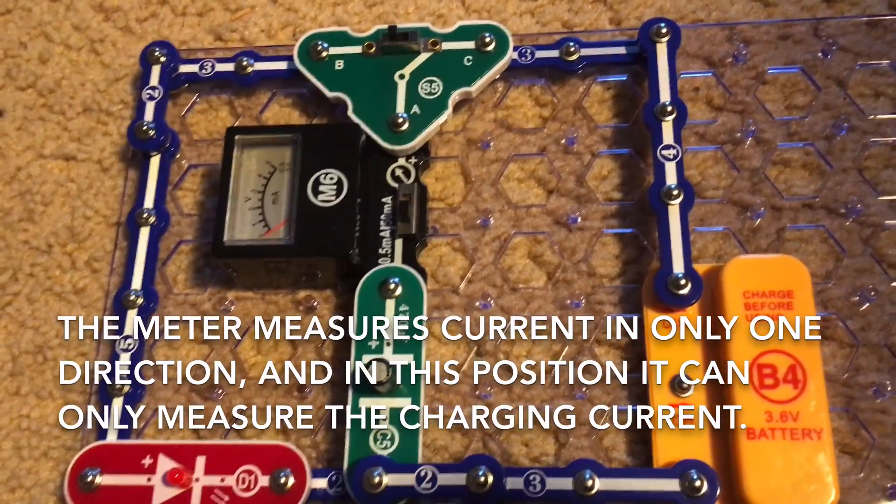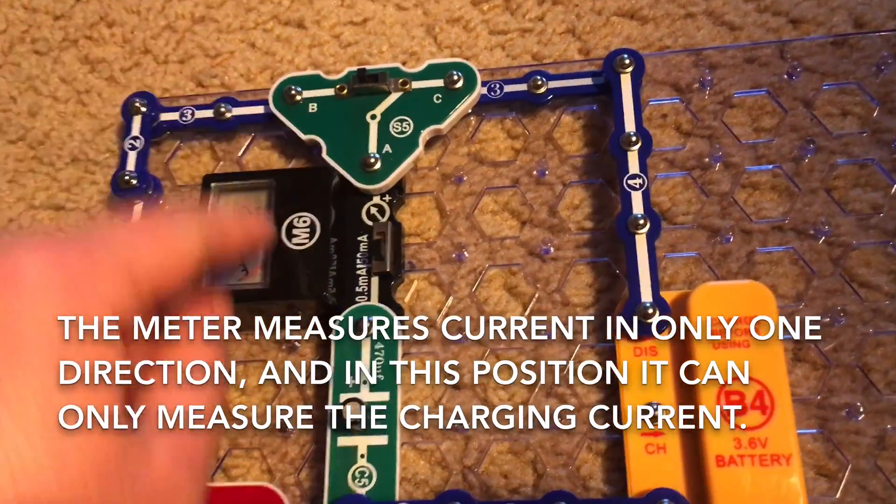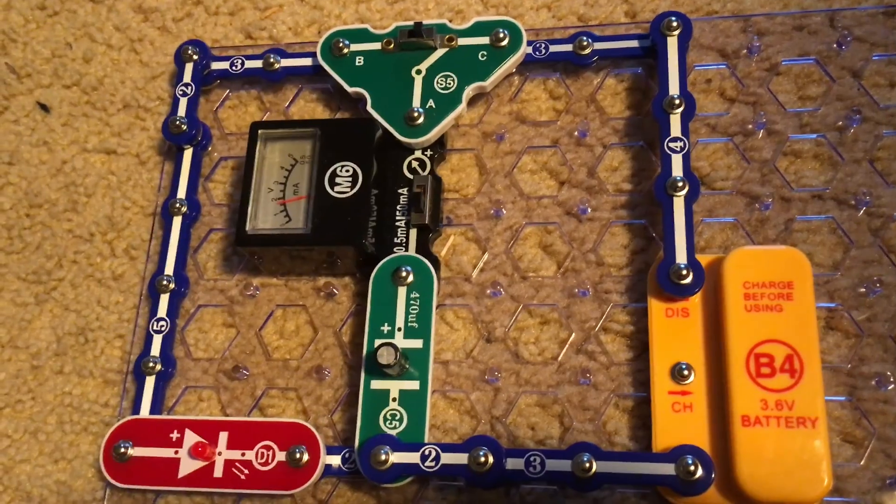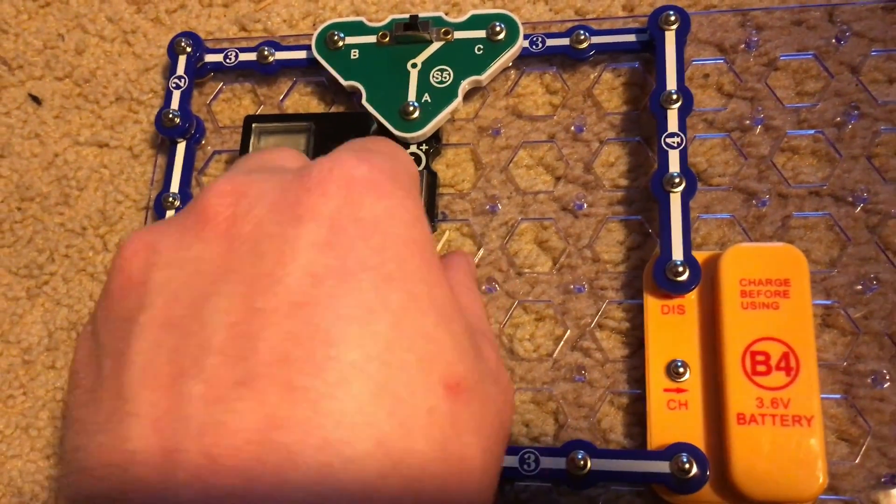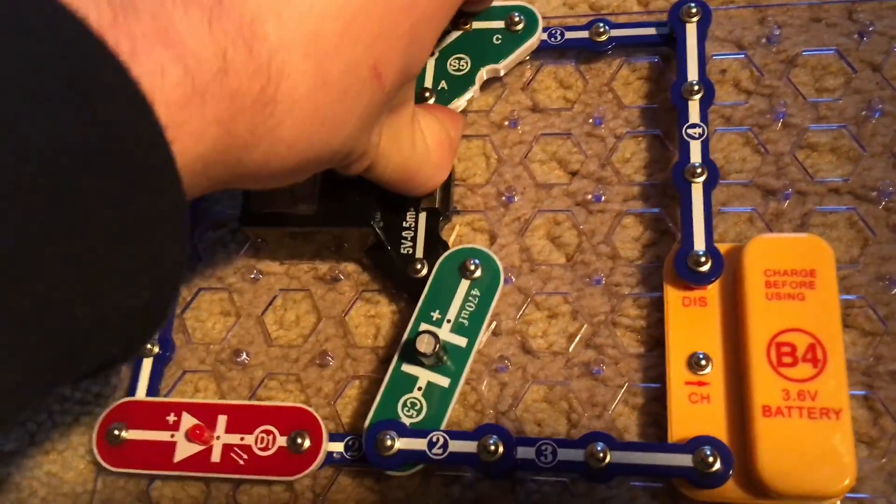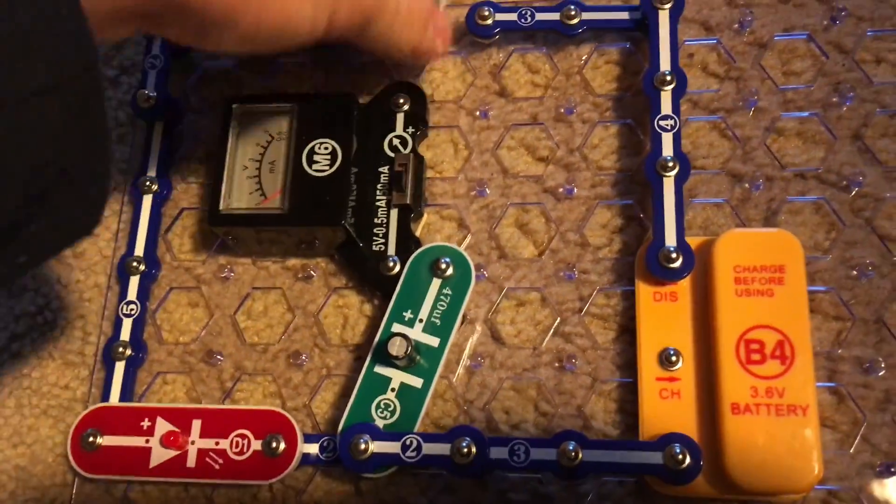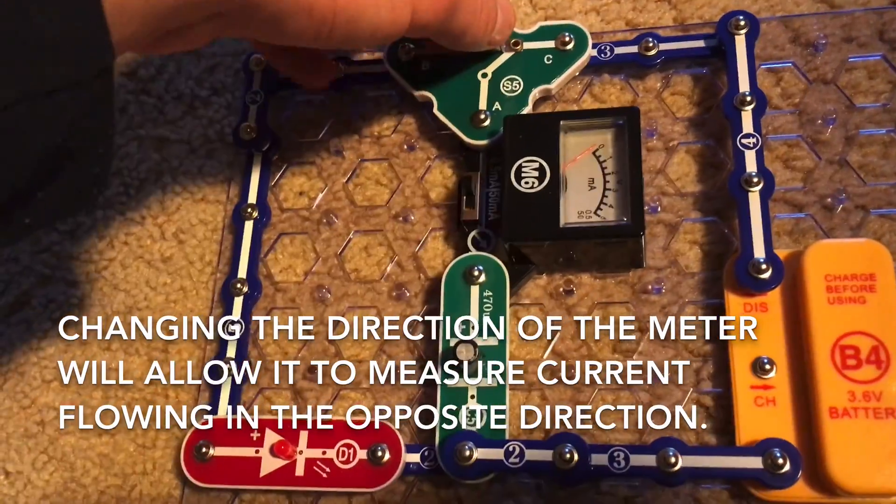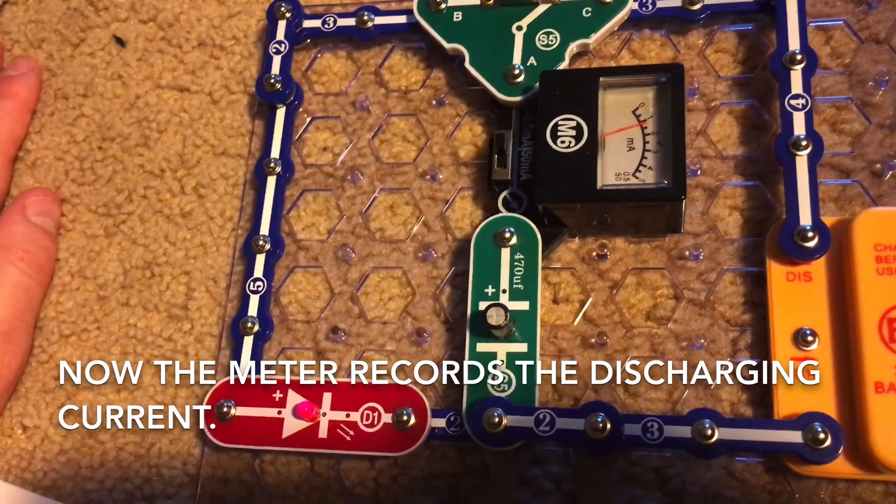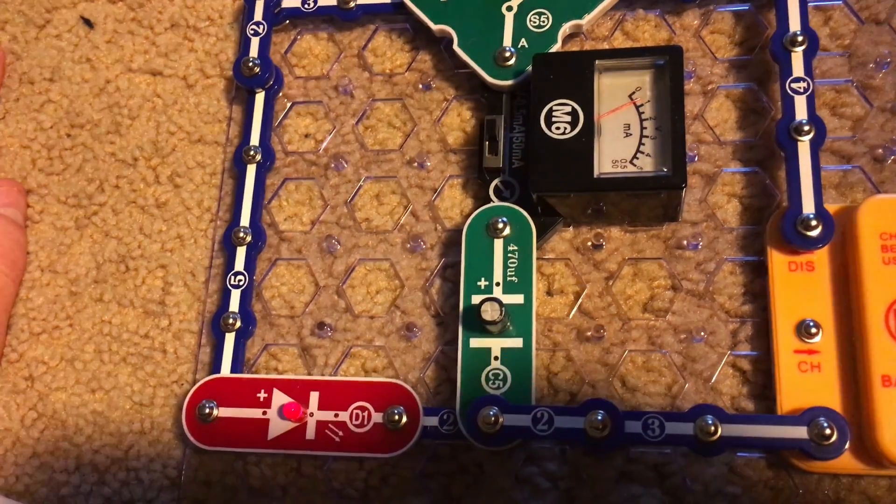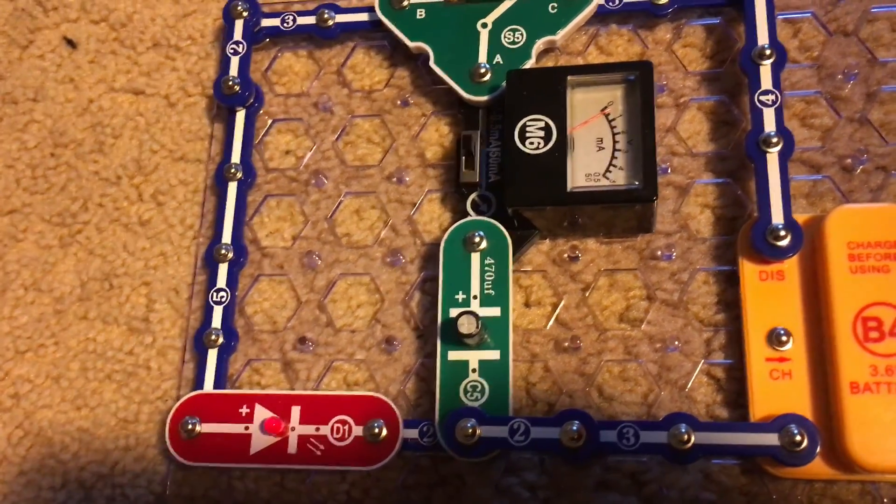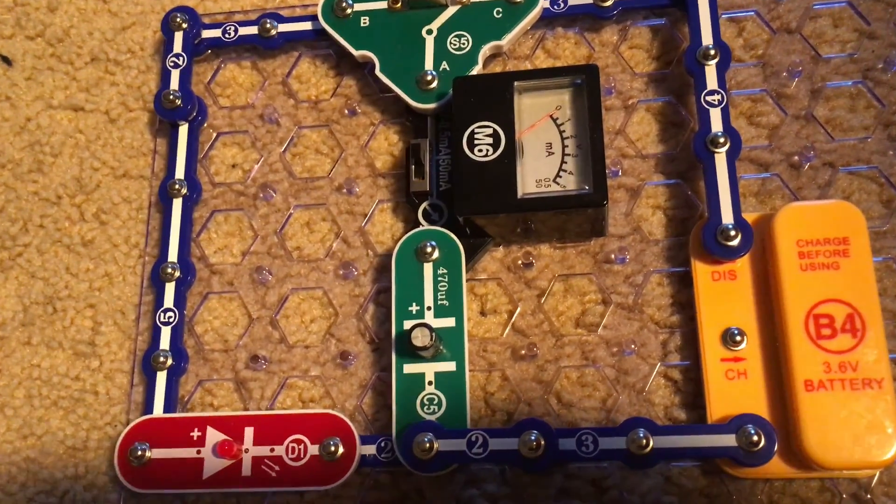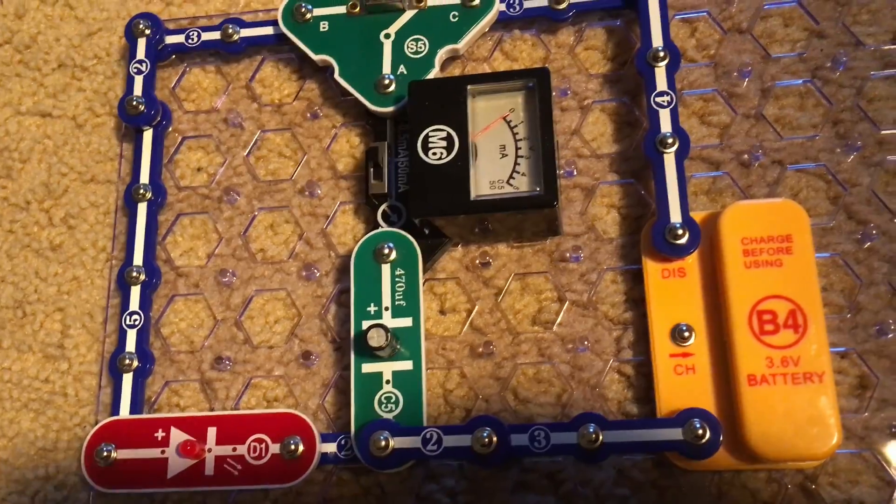The voltage meter only measures current in one direction, so when it's in this position it will only measure the incoming current flowing into the capacitor. But once it's charged we can change the direction of the meter so that it is facing the other way. Now when I move the switch to the B position the meter will record the current discharging through the capacitor. Unfortunately the meter cannot work both ways, so you have to switch it each time if you want to measure both the incoming and outgoing current.